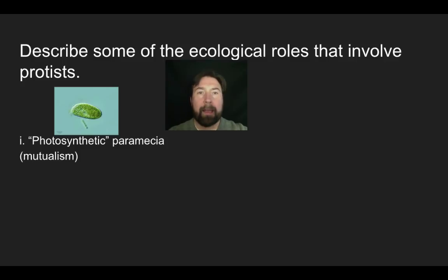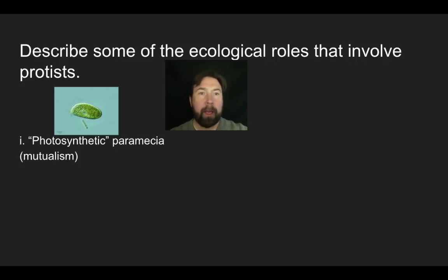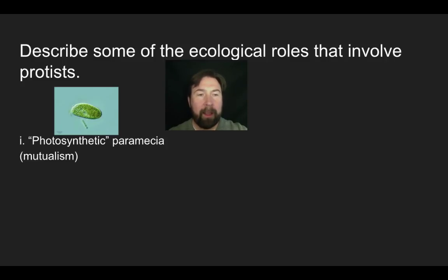The first ecological role we're going to talk about is that of a photosynthesizer or producer. We're showing a photosynthetic paramecium here. There are photosynthetic protists — things like euglena and others in the Protista kingdom that are photosynthetic. Paramecia normally are not photosynthetic, but paramecium bursaria has the capacity to take in photosynthetic bacteria and use it very much like a chloroplast, forming a mutualistic relationship.